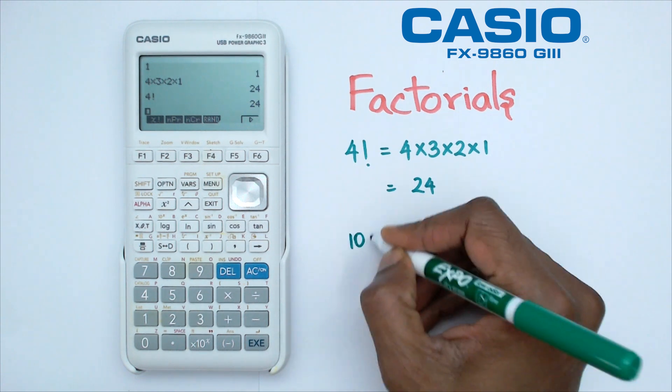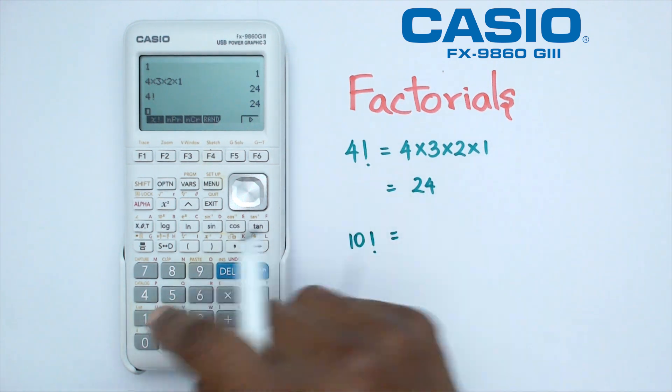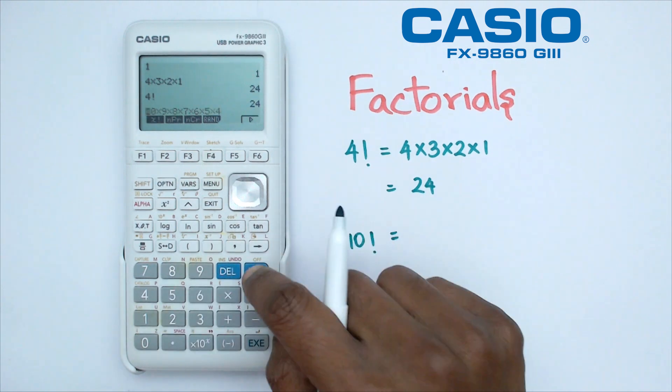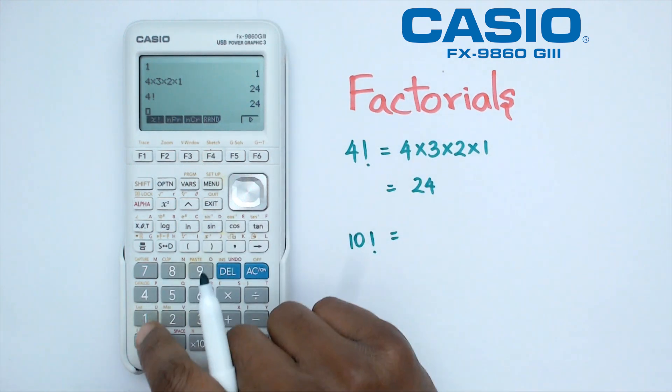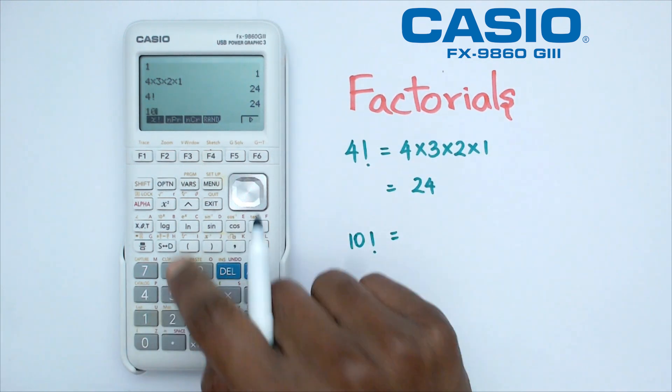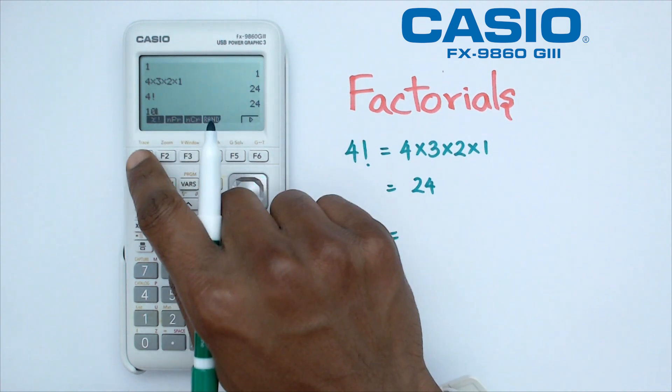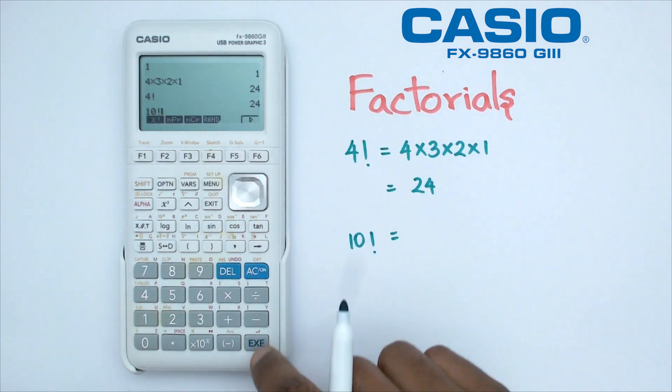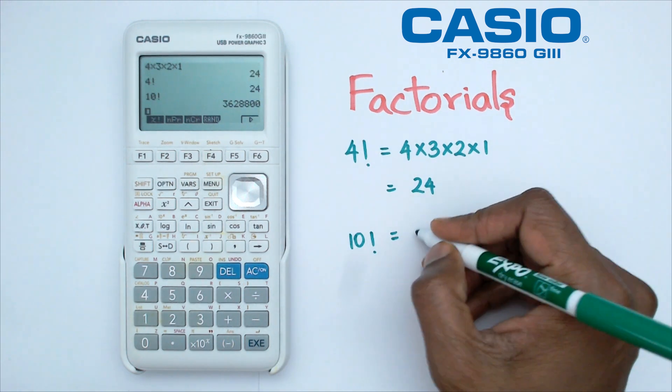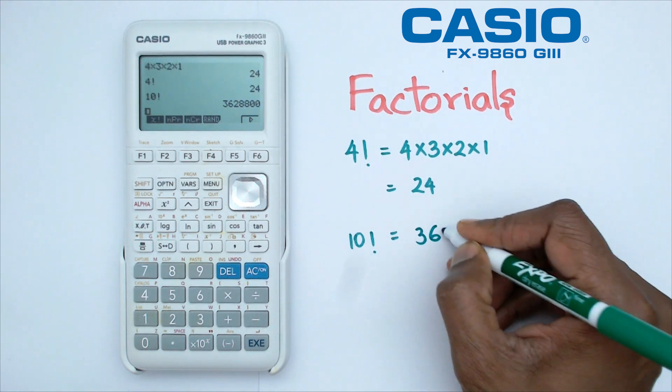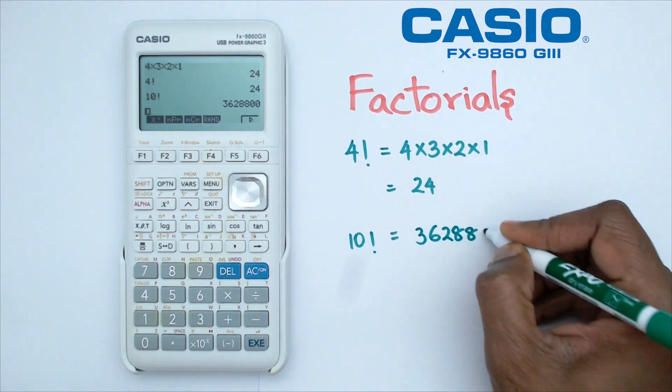So let's think about 10 factorial. So with 10 factorial, you could actually go 10 times 9 times 8 times 7 times. Okay, this is just taking too long. So instead, what you could do is you could just go 10 and we're going to click on that X exclamation mark, which is the factorial button. So 10 factorial is equal to 3,628,800.